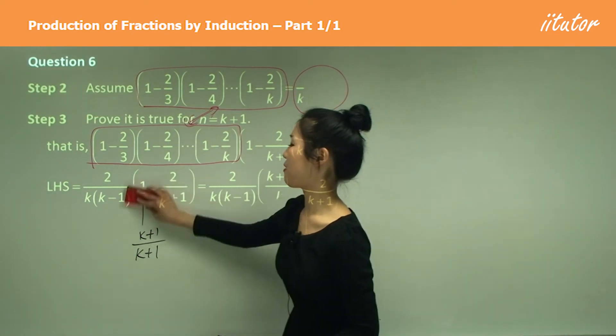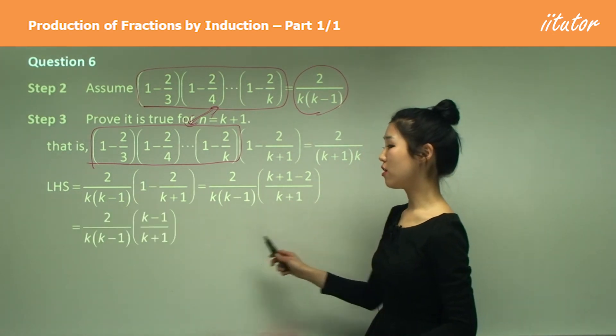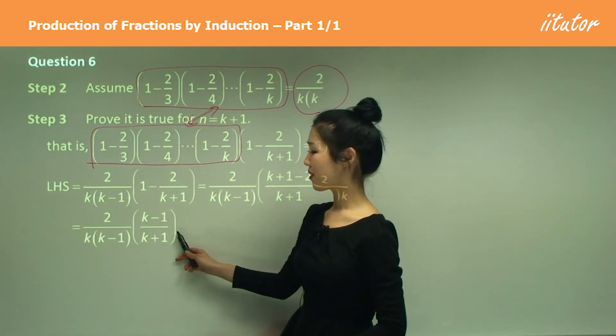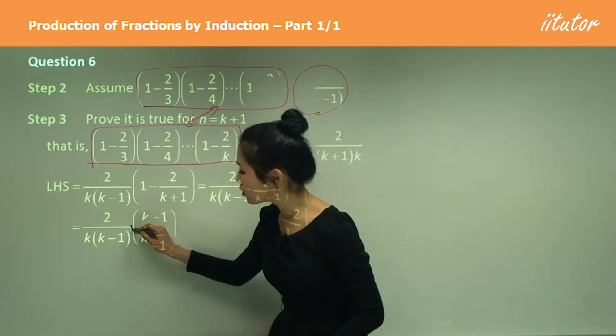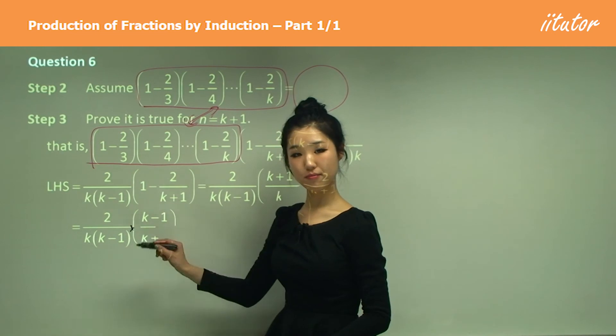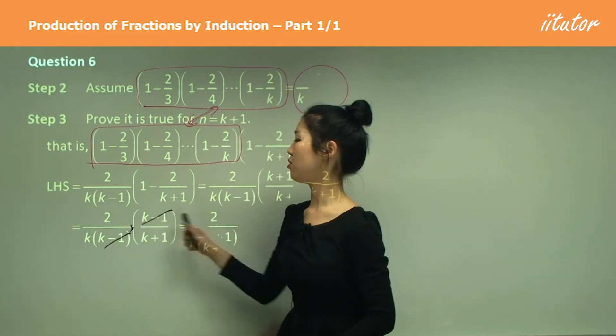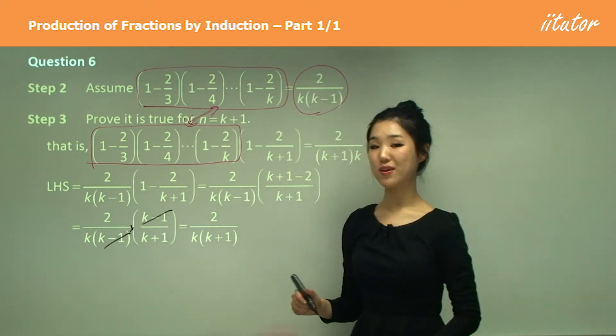And all I need to do is simplify further. I know that k plus 1 minus 2 is k minus 1. And have a look. Because we're multiplying, and we know that k minus 1, these are common, we can cancel them out. So we just have 2 over k times k plus 1 left.